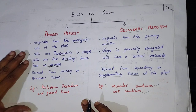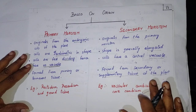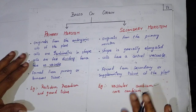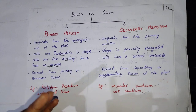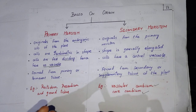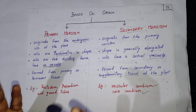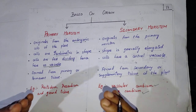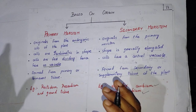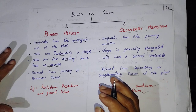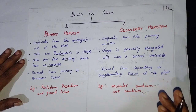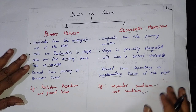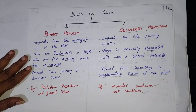With this we come to an end of meristematic tissues and the different types of meristems — based on their origin, based on their location, based on their plane of division, and what type of meristems are found in different parts of the plant body. I hope you have clarity about the entire topic. Next class we will be talking about the permanent tissues. Thank you, children.